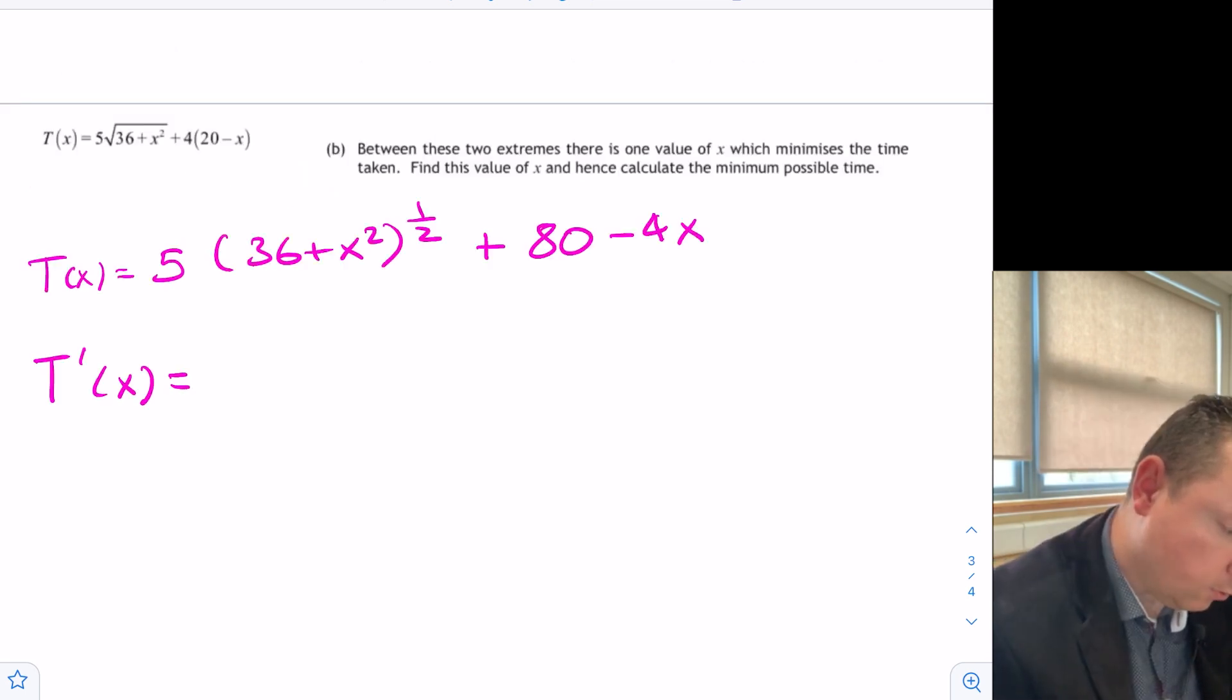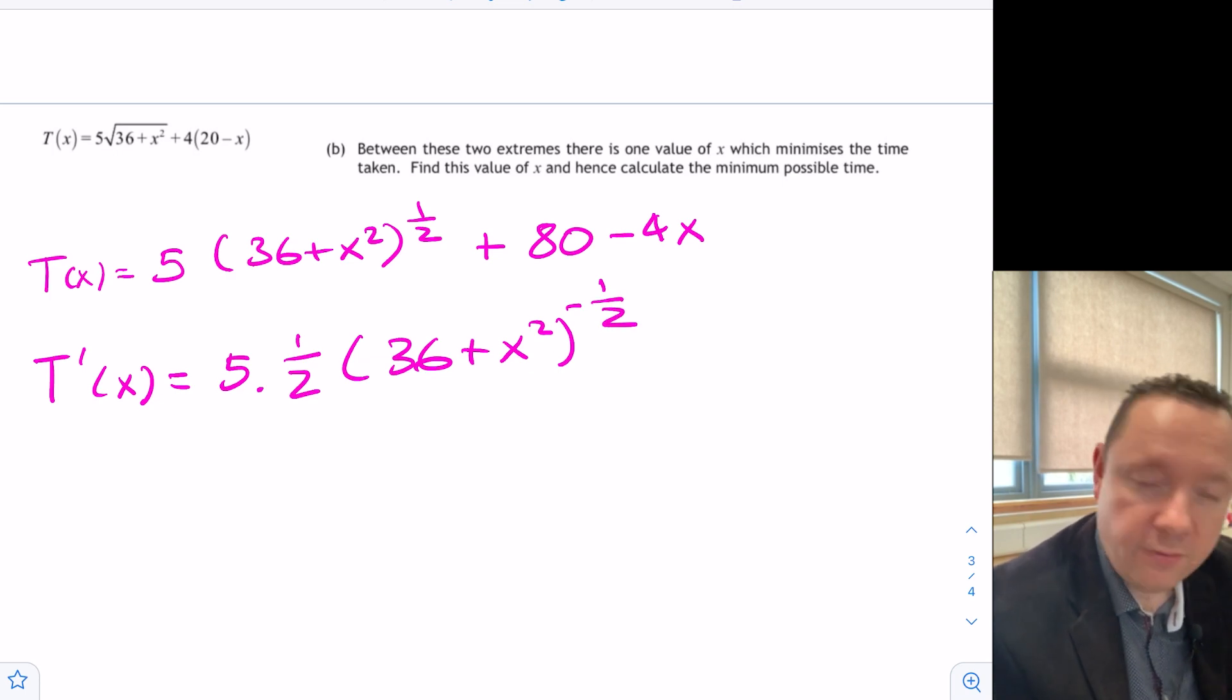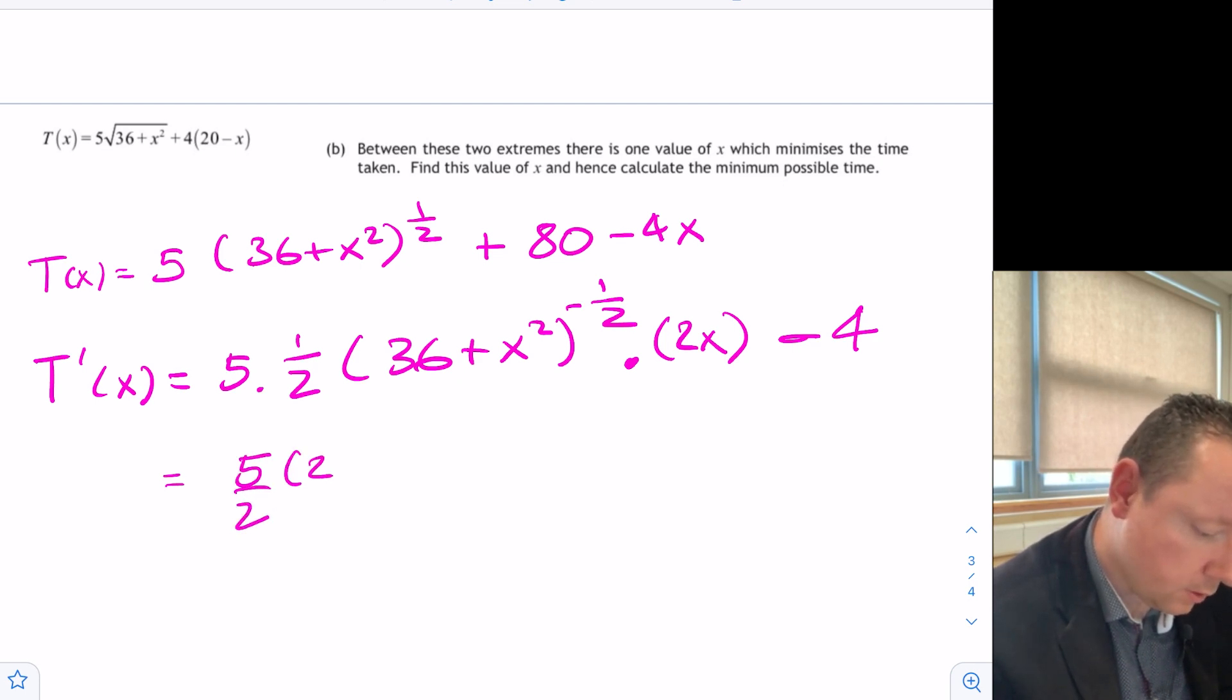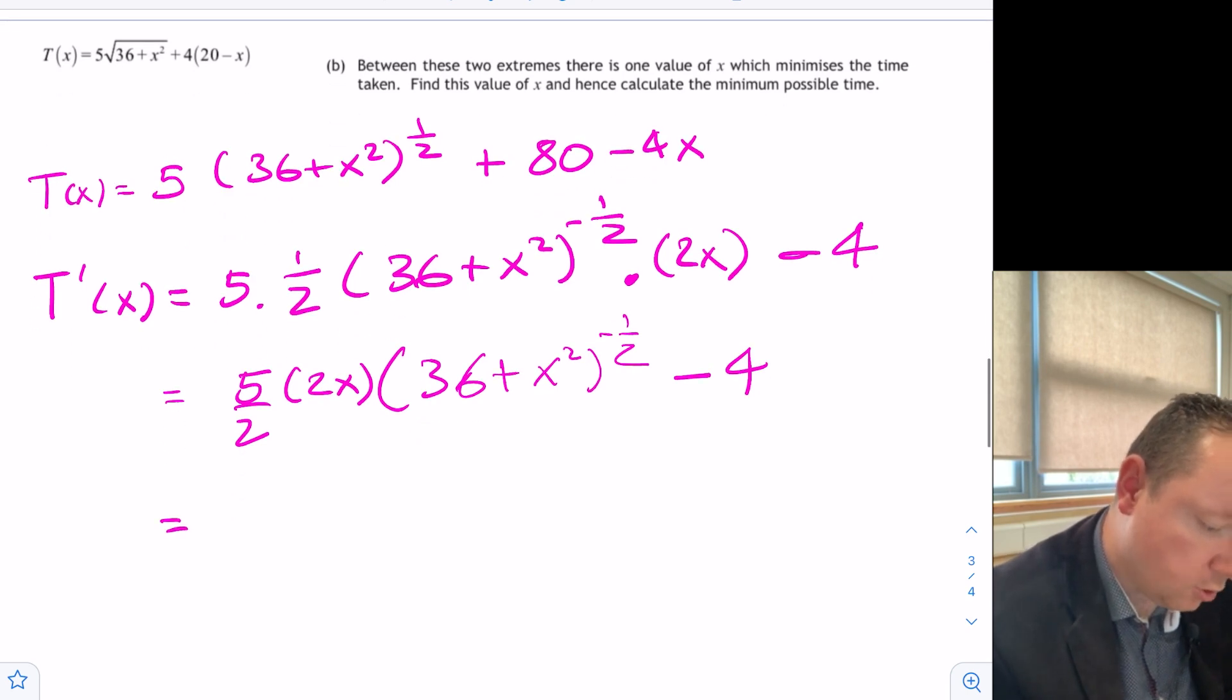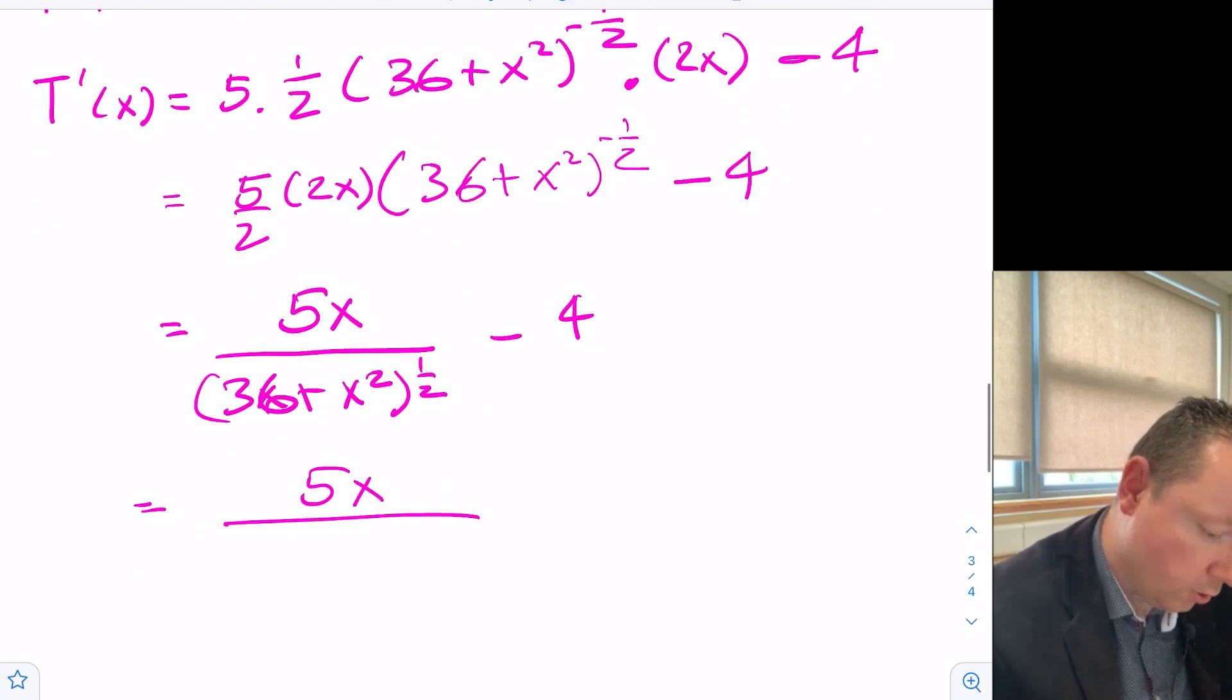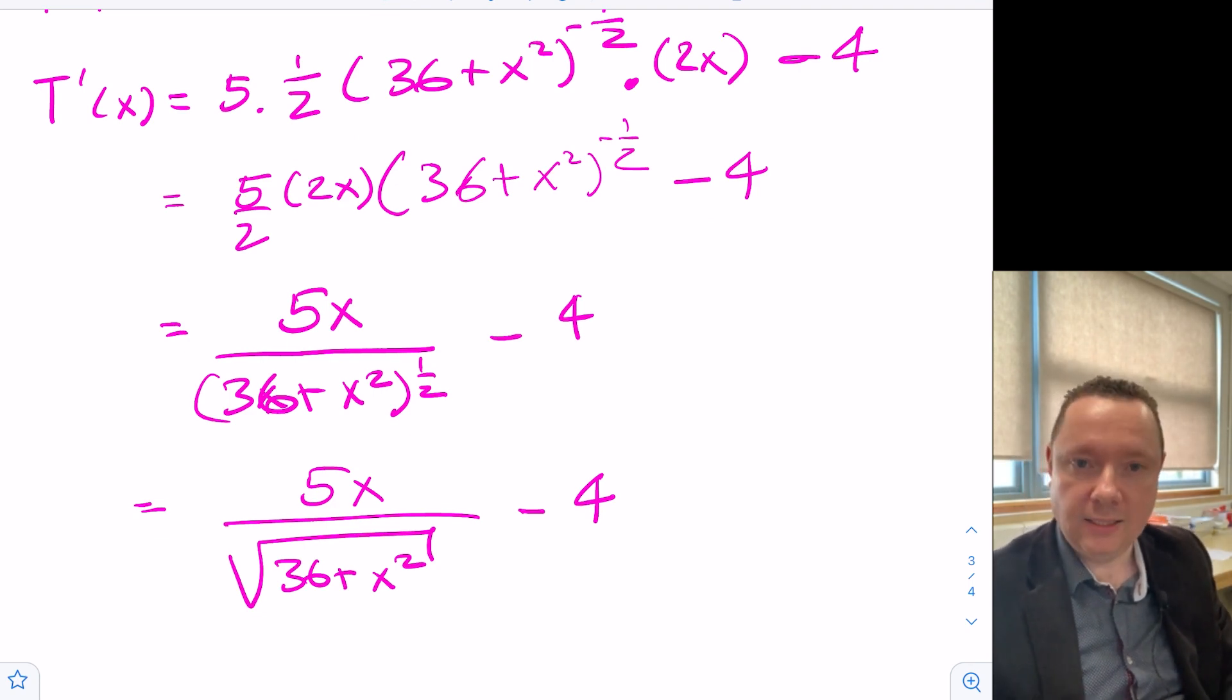Now we can differentiate this using the chain rule for this part. t dash x is equal to 5 times a half taking the power down 36 plus x squared to the minus a half and then we need to differentiate 36 plus x squared because of the chain rule so times 2x and then we'll still have take away 4 on the end because that's zero and that differentiates 4. Tidying that up we get 5 over 2 times 2x times 36 plus x squared to the minus a half take away 4. 5 times 2 is 10 divided by 2 is 5 so you've just got 5x for the first term we could say that's over the square root of 36 plus x squared take away 4.